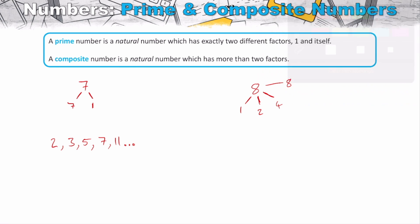This raises the question: is one a prime or composite number? A prime number must have exactly two different factors — one and itself. One does have the factor of one, and it can be divided by itself, but that's the same factor in both instances. So it doesn't have exactly two different factors, and it doesn't have more than two either. One is neither prime nor composite — it's a unique number.